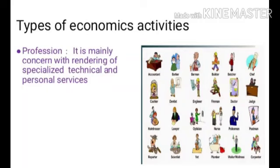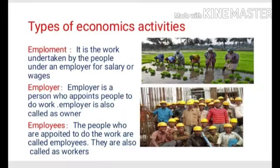Profession is mainly concerned with providing specialized technical and professional services. It may be a professional cook, driver, veterinary doctor, optician and many more professionals. Now let us understand the third type of economic activity — employment. It is the work undertaken by the people under an employer for salary or wages. You can see in the picture an agricultural laborer and an industrial laborer. The employer is the owner who appoints people to work under them. The workers are called employees and they are appointed by the employers.